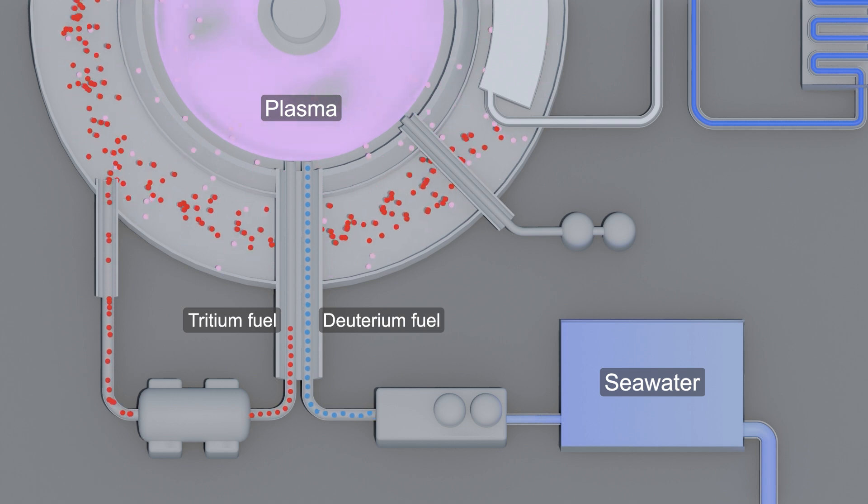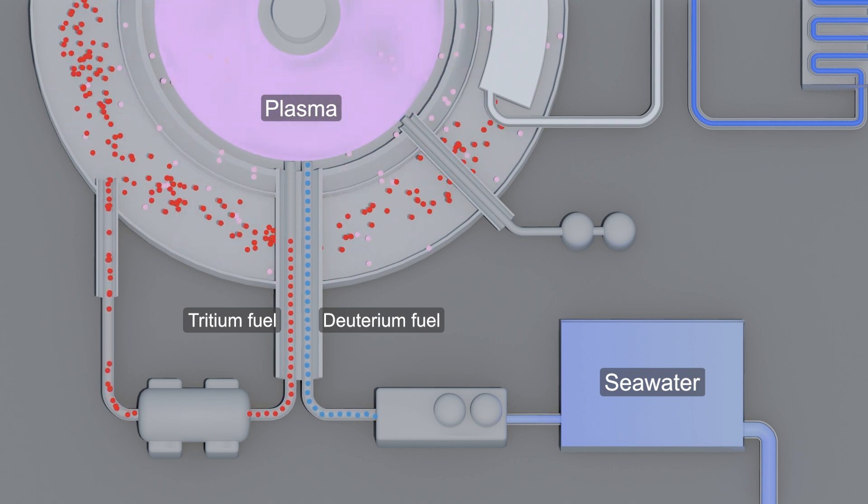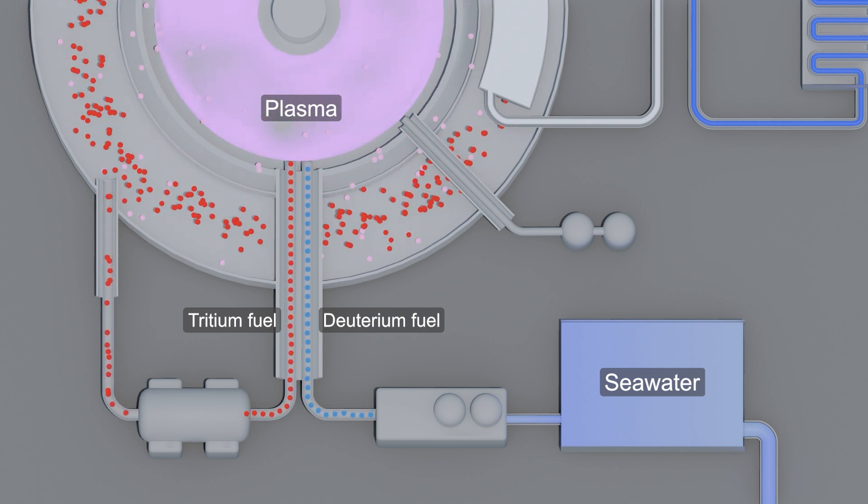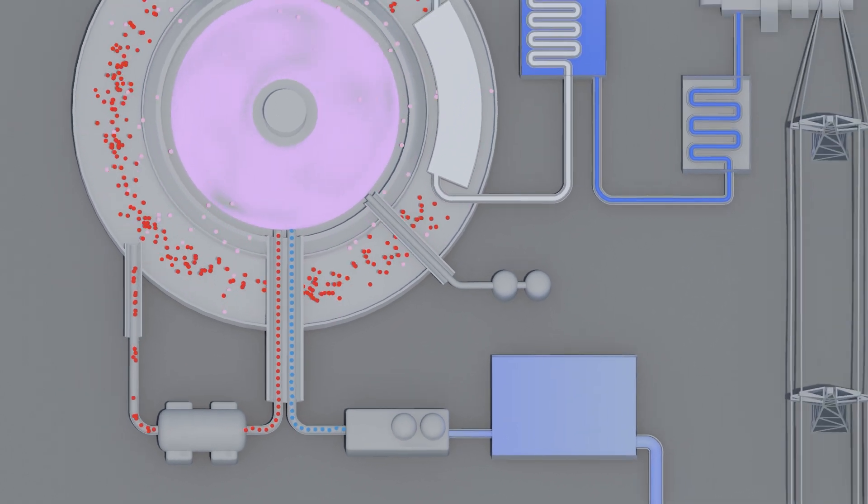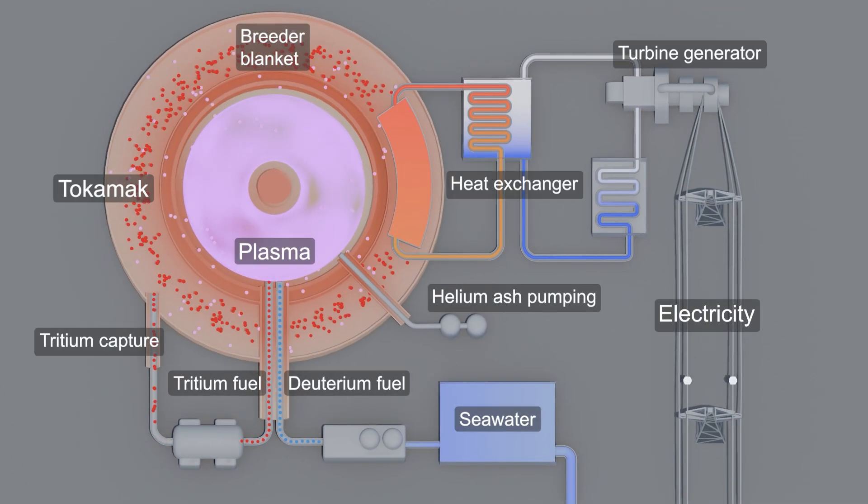The tritium can be fed back into the plasma, thereby creating a self-sustaining fuel cycle for the fusion power plant. The heat can be fed out to a turbine hall in the breeder coolant circuitry.